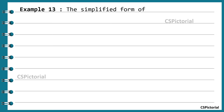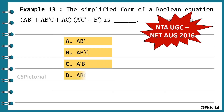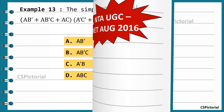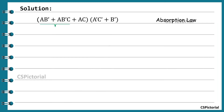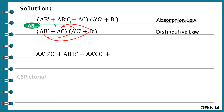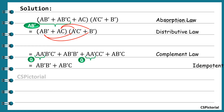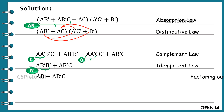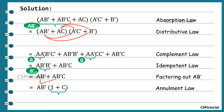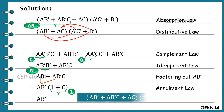Simplify ab̄ + ab̄c + ac(āc̄ + b̄). First, by the absorption law, ab̄ + ab̄c reduces to ab̄. Applying the distributive law and then the complement law, terms containing aā equal zero and are omitted. The idempotent law reduces b̄b̄ to b̄, and factoring out ab̄ gives ab̄(1+c). The absorption law directly gives ab̄. So the final simplified expression is ab̄.